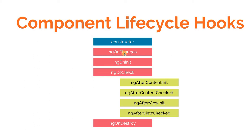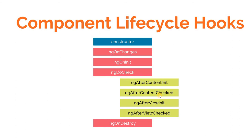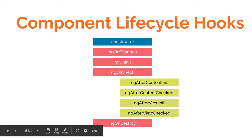The lifecycle hooks shown in pink are the ones that every component as well as directive has. But there are four lifecycle hooks that only Angular components have — directives do not have these. So essentially, an Angular component has eight lifecycle hooks, while a directive has just four: ngOnChanges, ngOnInit, ngDoCheck, and ngOnDestroy.